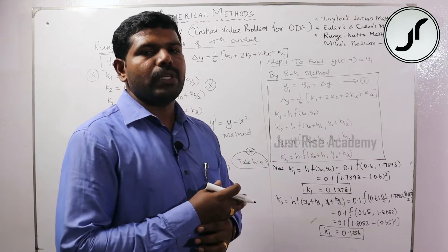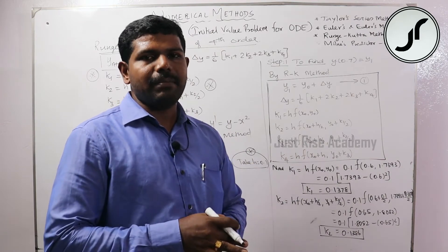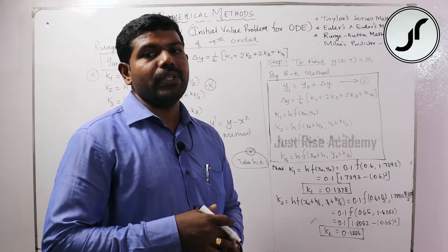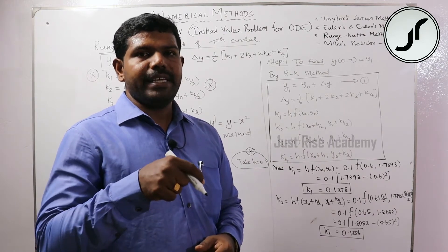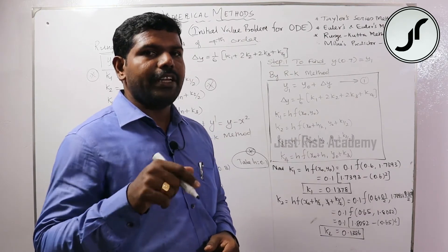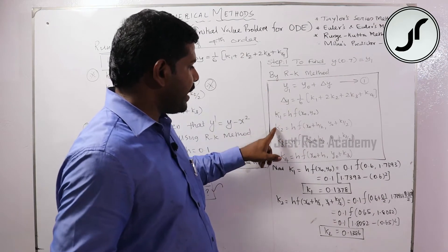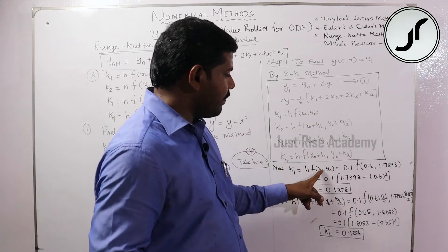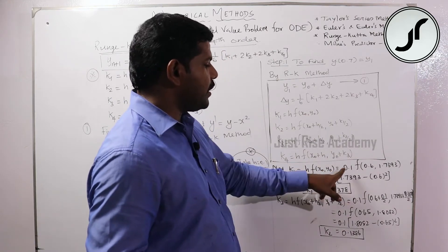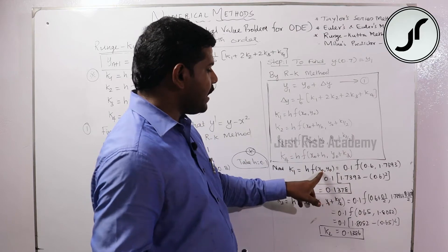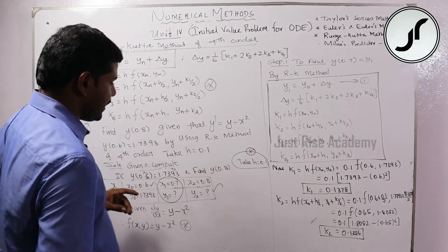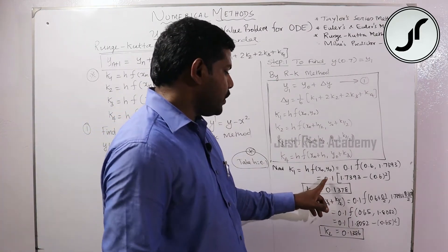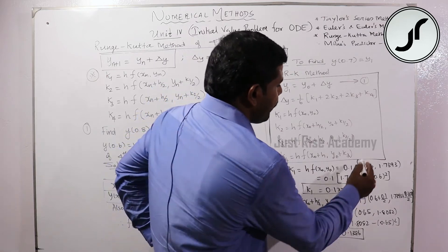k3 equals h into f(x0 plus h/2, y0 plus k2/2). k4 equals h into f(x0 plus h, y0 plus k3). Now substituting: h equals 0.1, x0 equals 0.6, y0 equals 1.7393. So k1 equals 0.1 into f(0.6, 1.7393).